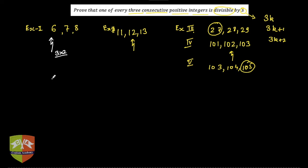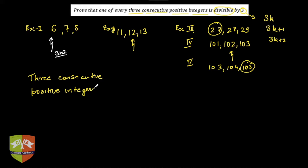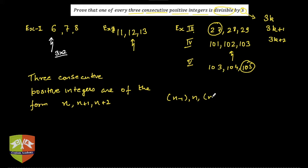Any three consecutive positive integers are of the form n, n plus 1, and n plus 2, where n is a positive integer. You can also express them as n minus 1, n, and n plus 1 — there are multiple valid representations. Let us proceed with n, n plus 1, n plus 2.